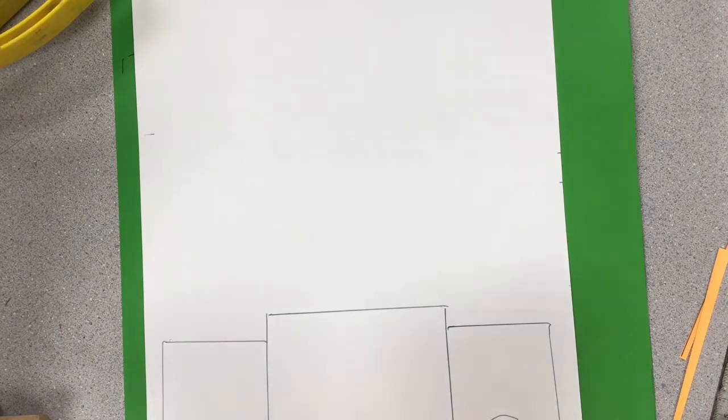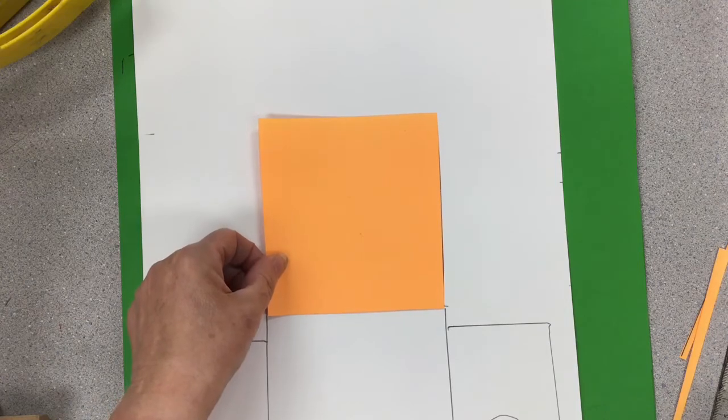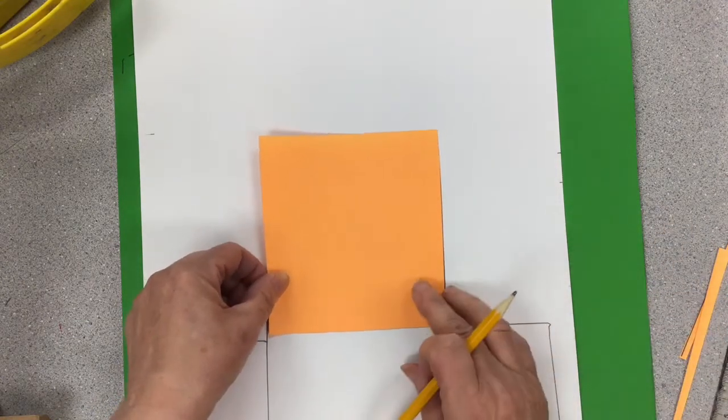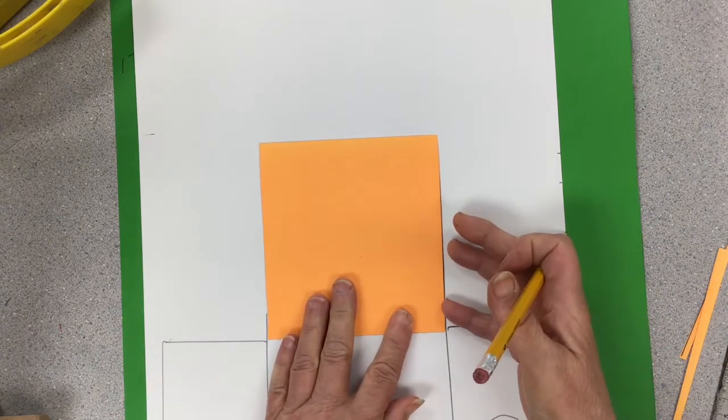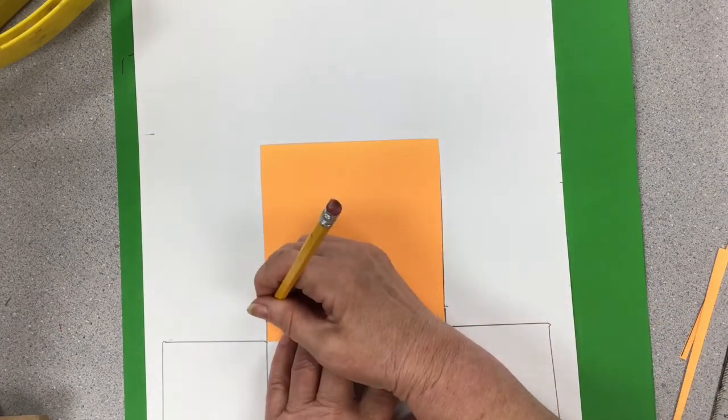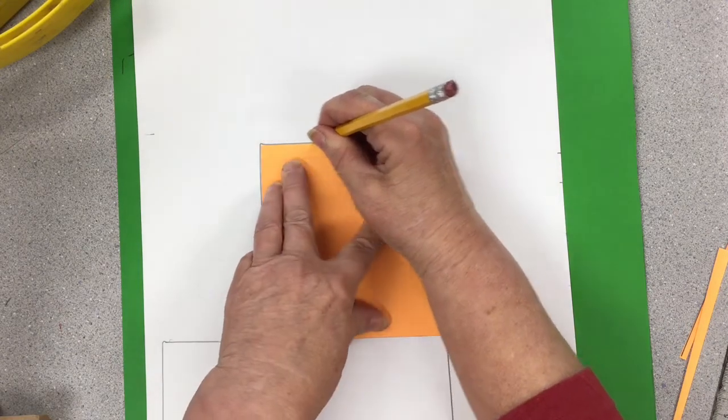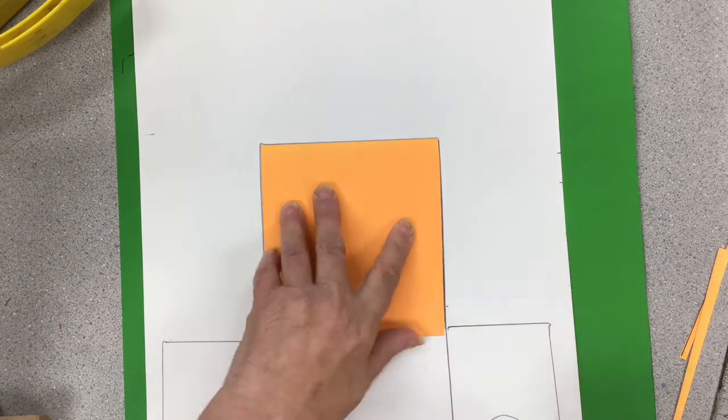So next, this section of my cathedral will be where I'll place my stained glass window. So maybe I'll put that down a little bit. And just trace around this.